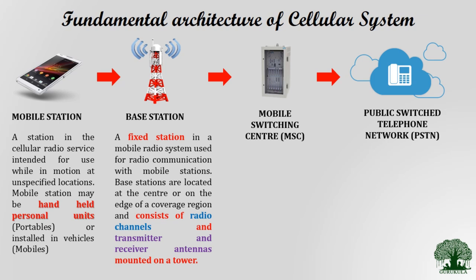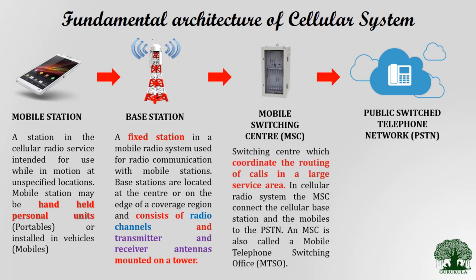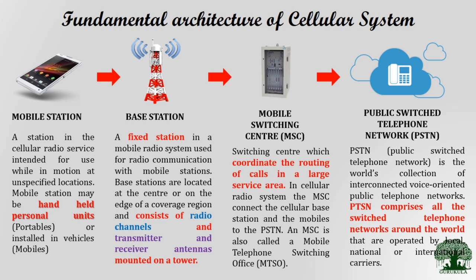All signals collected from the base station are forwarded to the mobile switching center, also abbreviated as MSC. The MSC is responsible for coordinating and routing calls in a large service area — routing my call to exactly the intended receiver, wherever they are geographically. All signals connected to the MSC are then forwarded to the public switched telephone network, or PSTN, which is the world's collection of interconnected voice-oriented public telephone networks.